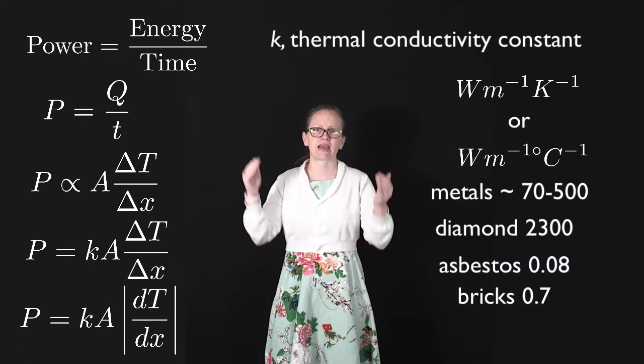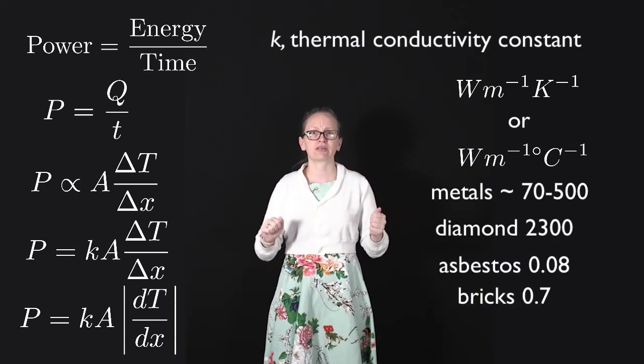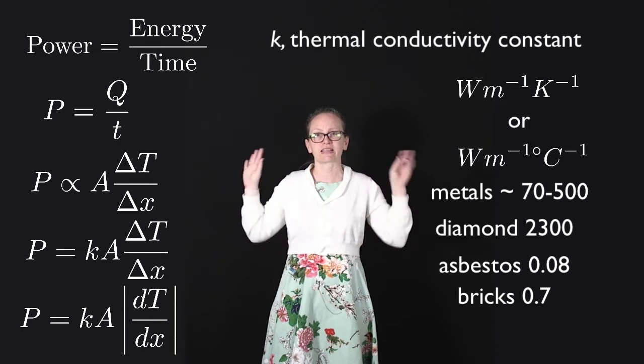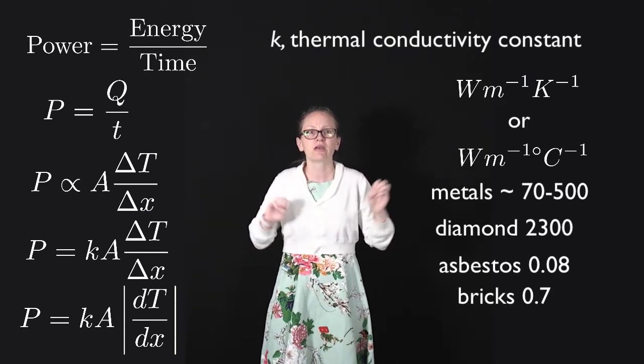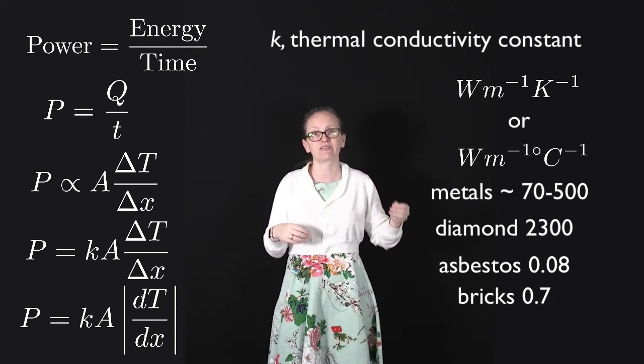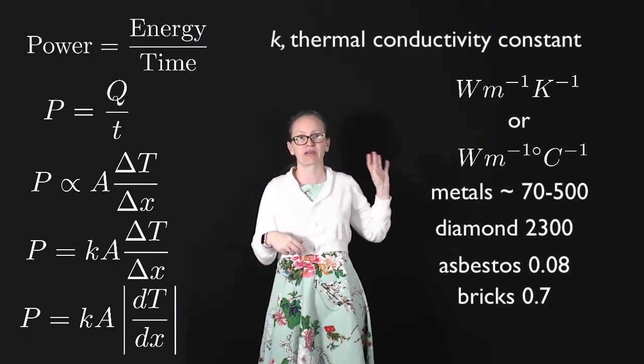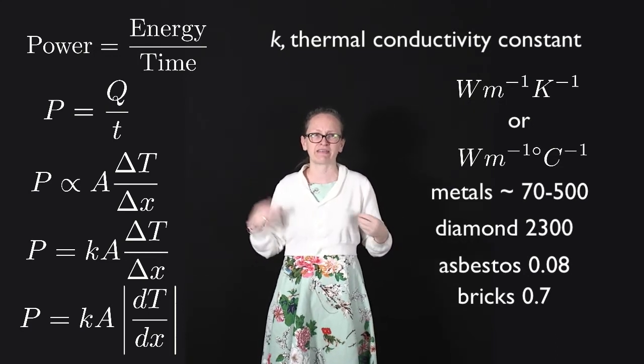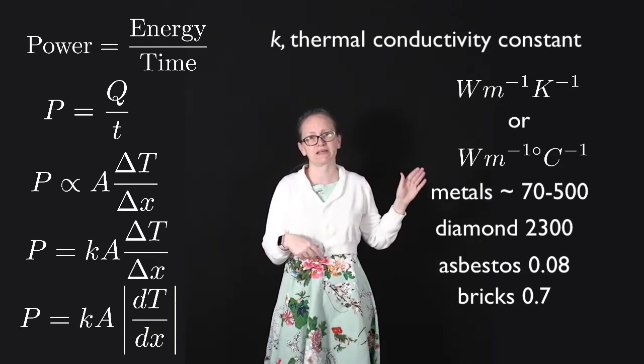Building materials tend to have fairly low thermal conductivities because we don't want a building which is leaking heat all the time. For example, asbestos has a thermal conductivity of 0.08 watts per meter per Kelvin, and bricks tend to be around about 0.7 watts per meter per Kelvin.